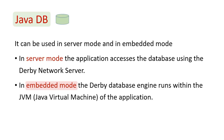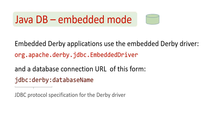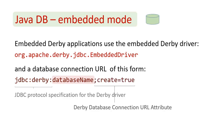Let's have a closer look at the embedded mode. For embedded Derby applications, you need to use the embedded Derby driver. It always has the same form: org.apache.derby.jdbc.EmbeddedDriver. You also need a database connection URL of the following form: jdbc:derby: — that is the JDBC protocol specification for the Derby driver — followed by the database name. And optionally, there could be one or multiple Derby database connection URL attributes. Derby translates those attributes into properties.